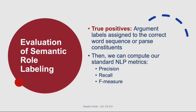We've learned how to develop both feature-based and neural semantic role labelers. To evaluate semantic role labeling, we typically check to make sure that each argument label is assigned to the correct word sequence or parse constituent. Based on that information, we can compute our standard NLP metrics: precision, recall, and F-measure.